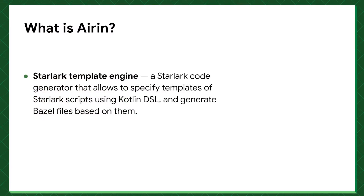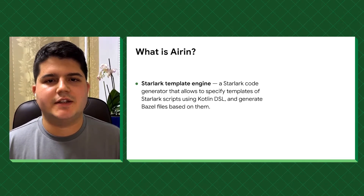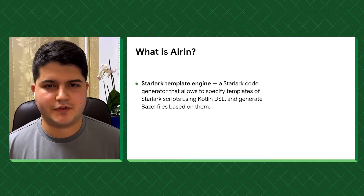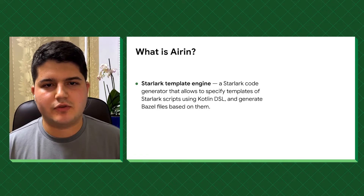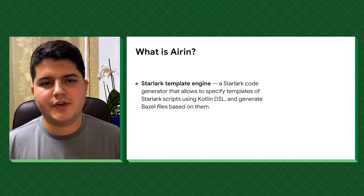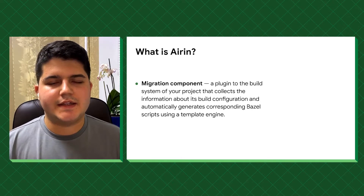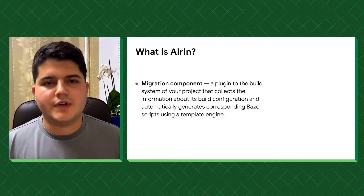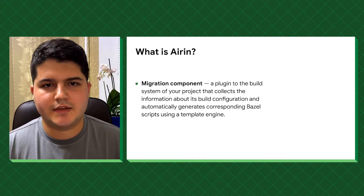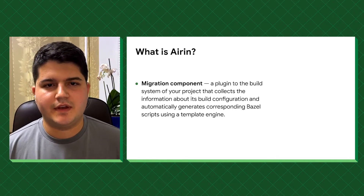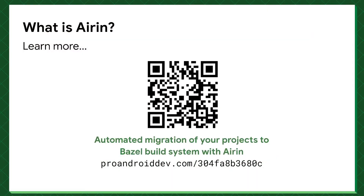Overall, IRIN consists of two primary components. The first is a Starlark template engine — essentially a code generator for Starlark that allows you to define templates using Kotlin language and Kotlin DSL and generate Bazel scripts based on those templates. The second component is a migration component which works as a plugin to your build system, gathers all the build configuration of your project, and generates corresponding Bazel files using the template engine. If you want to learn more, please check out the blog post linked on your screen.